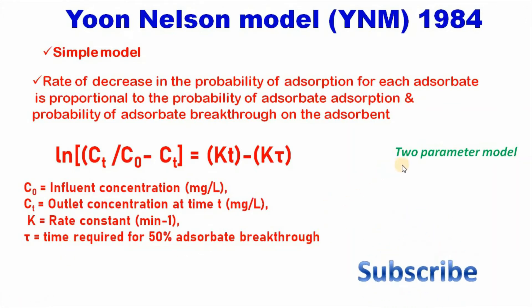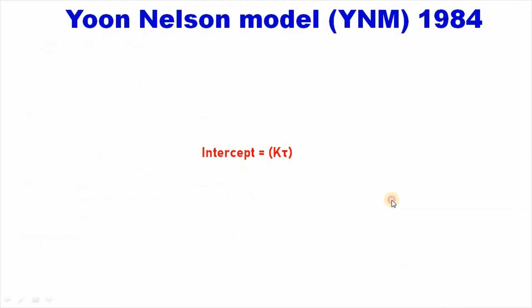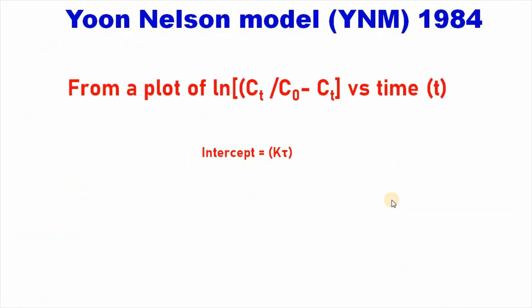It is a typical two-parameter model. From a plot of ln(Ct divided by C0 minus Ct) versus time, we can get the slope equal to K and the intercept equal to K·tau.